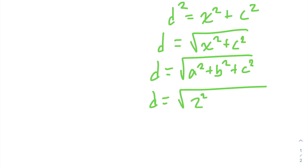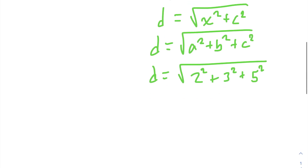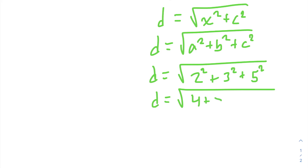plus the square of the second side length, which is 3. So we have that D is equal to the square root of 2 squared plus 3 squared plus 5 squared. So D is equal to the square root of 4 plus 9 plus 25, which gives D equals the square root of 38.